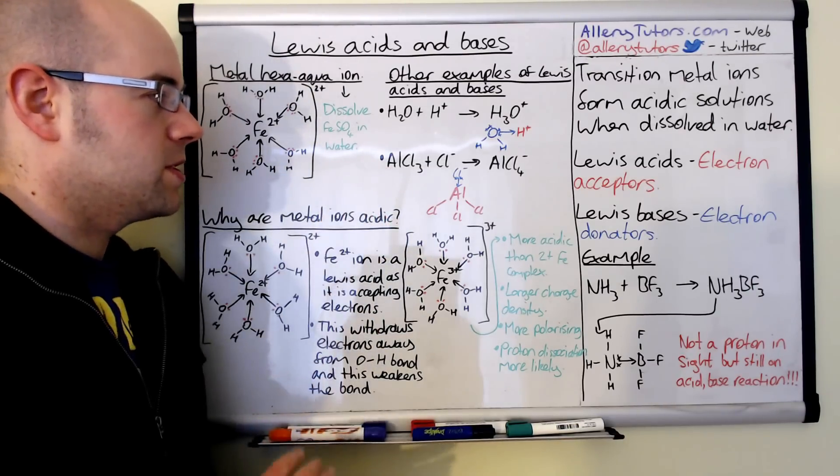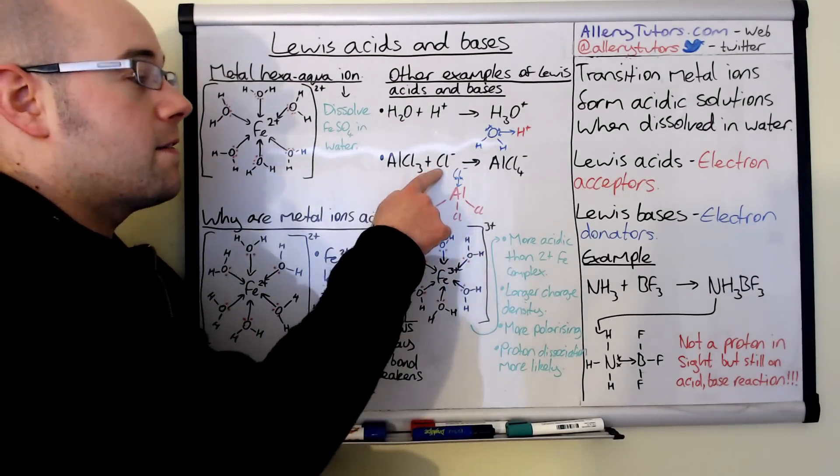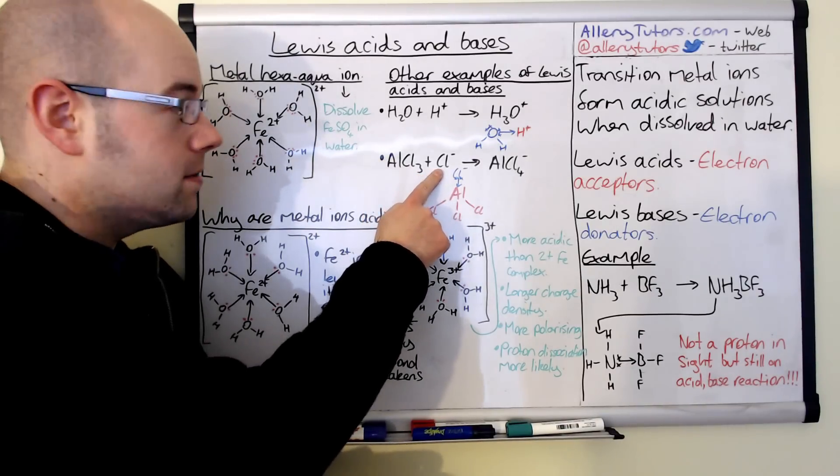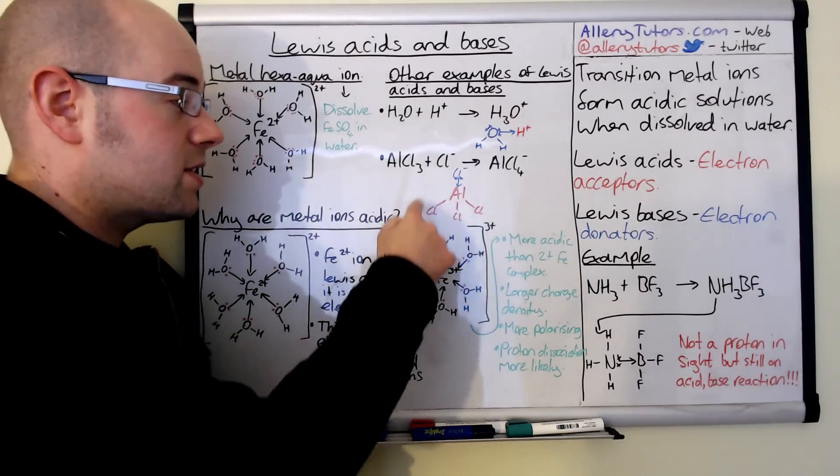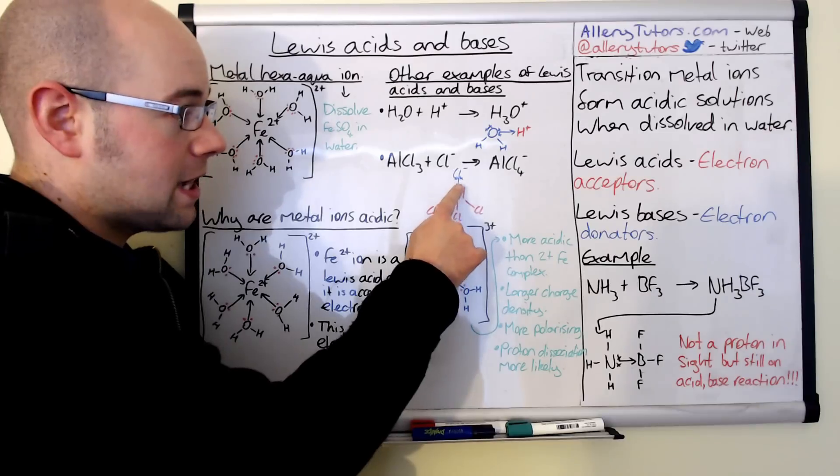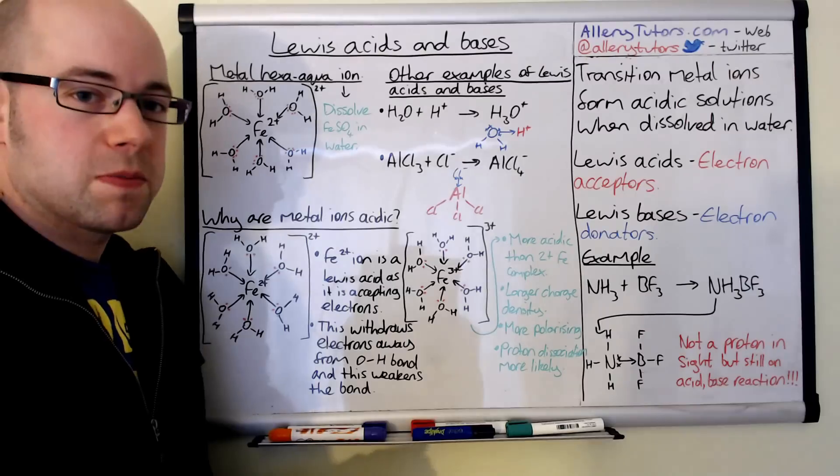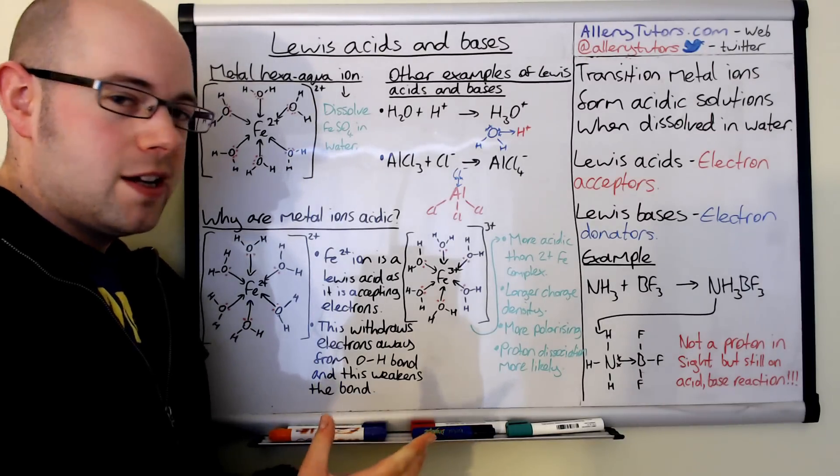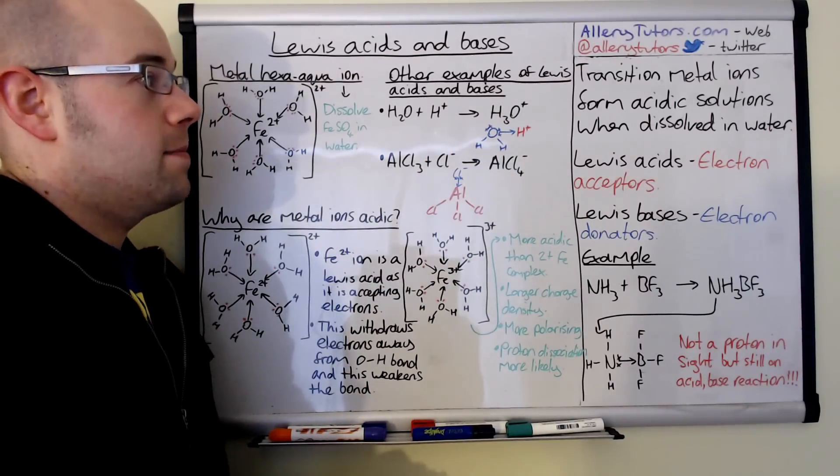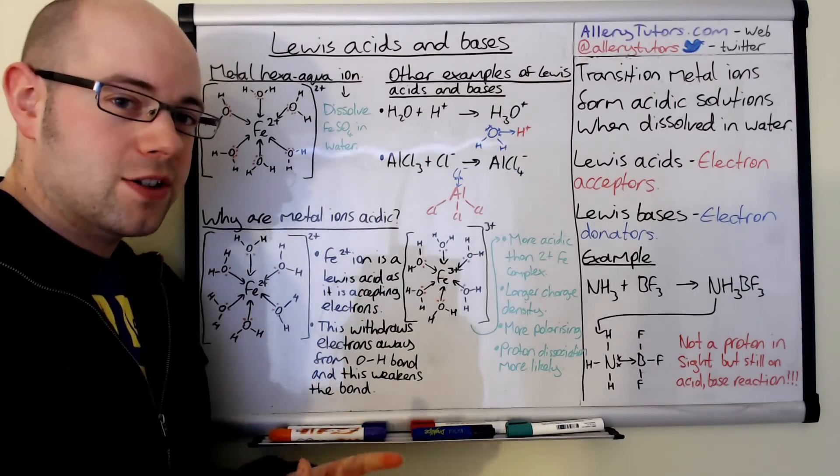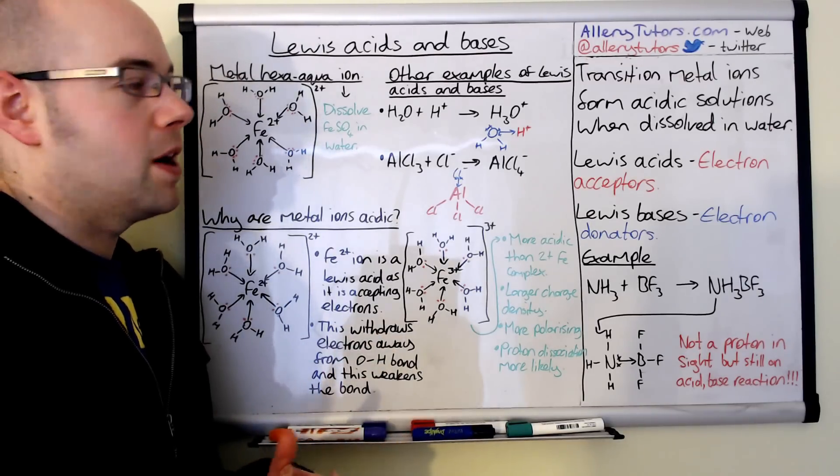Same goes for AlCl3. This is a halogen carrier used in reactions, and it can react with a chloride ion to form AlCl4 minus. The AlCl3 is the Lewis acid accepting electrons from a chloride ion, which I've marked up in blue representing a Lewis base. You can see here it's more common than we think, not just for this example but even for the H3O plus ion, which is actually the ion that's responsible for making things acidic.